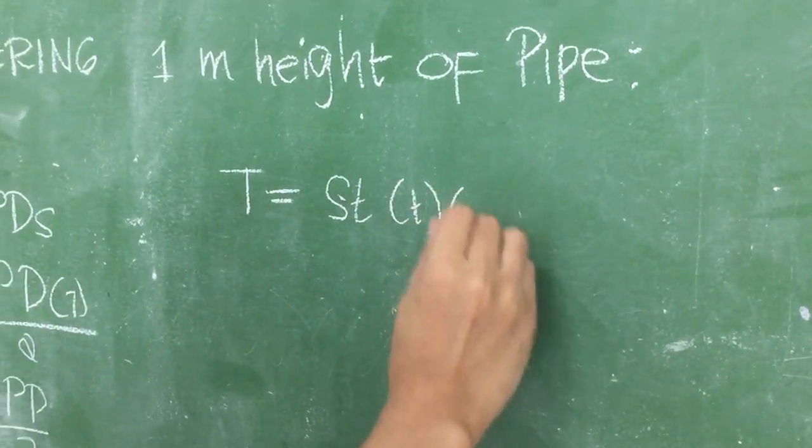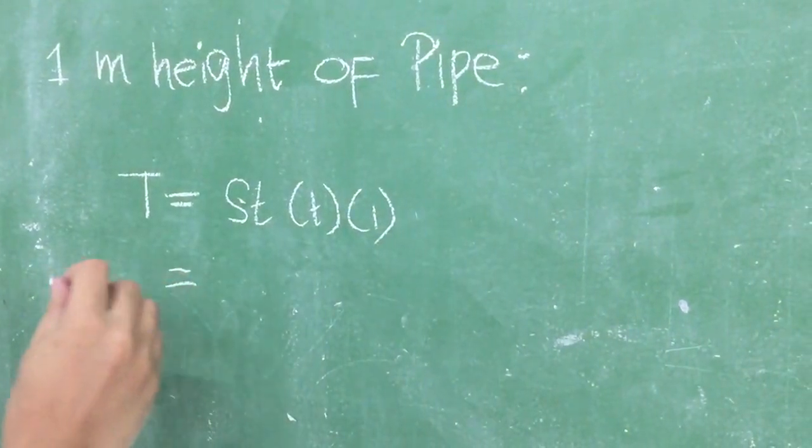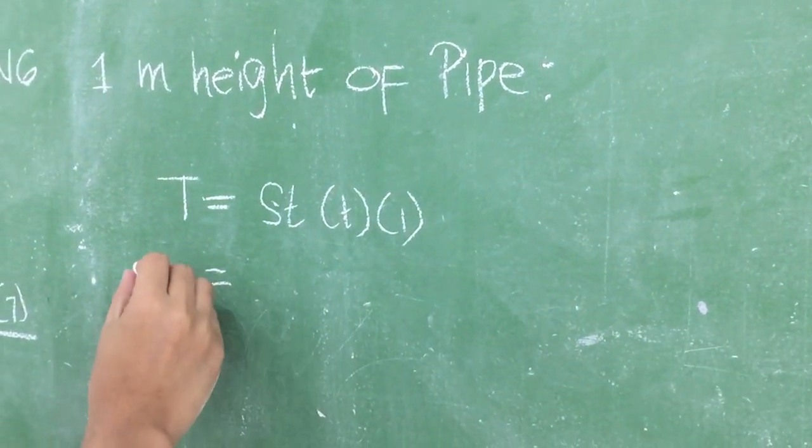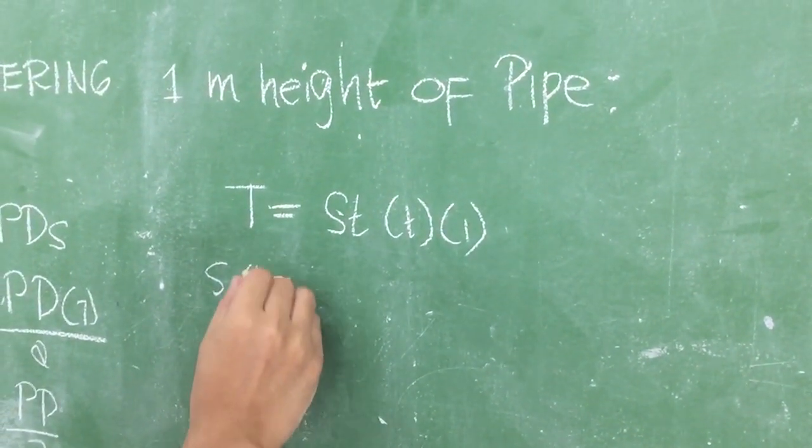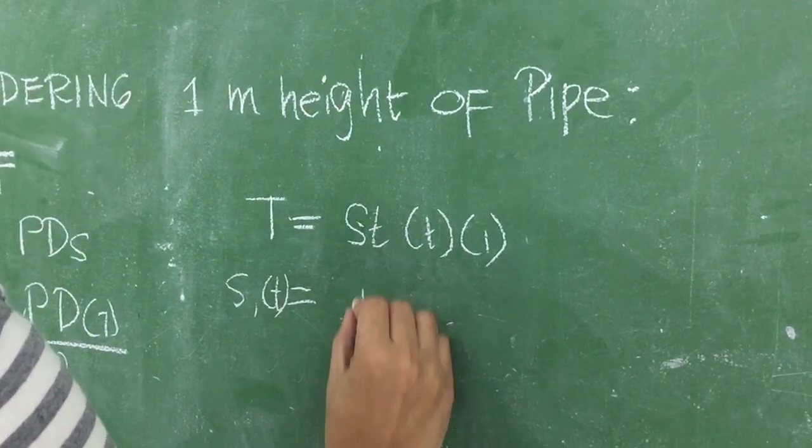Stress with respect to the thickness of the wall is equal to PD over 2t. So we got the formula: S equals PD over 2t.